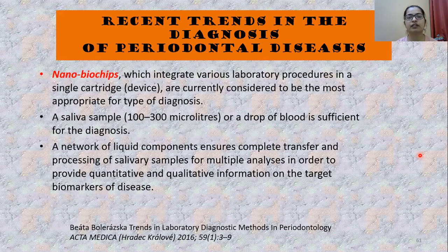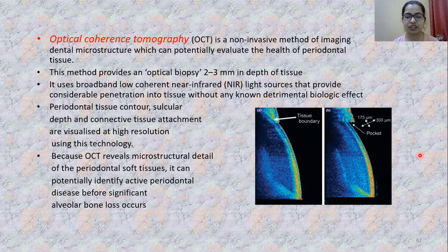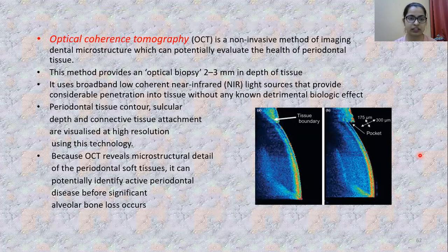Coming to recent trends in diagnosis of periodontal disease: nano-biochips integrate various laboratory procedures in a single cartridge, also known as lab-on-a-chip, utilizing a very small sample of saliva or blood for the diagnosis process. Optical coherence tomography (OCT) is a non-invasive method of imaging tissue microstructure that can potentially evaluate periodontal tissue health, providing an optical biopsy 2–3 mm deep in tissue. Because OCT reveals microstructure and detail of periodontal soft tissue, it can potentially identify active periodontal disease before significant alveolar bone loss occurs.